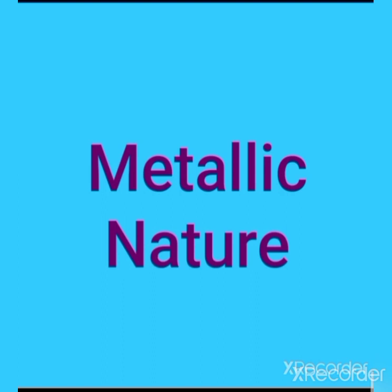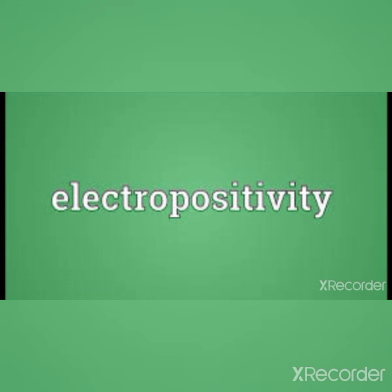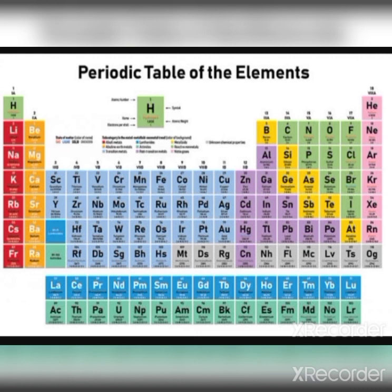Some of the elements in the periodic table have metallic nature. What is the reason for the metallic nature of elements? The reason is electropositivity. The tendency of an element to form a cation by losing an electron is known as electropositivity. Elements can be classified into metals and non-metals based on this property.